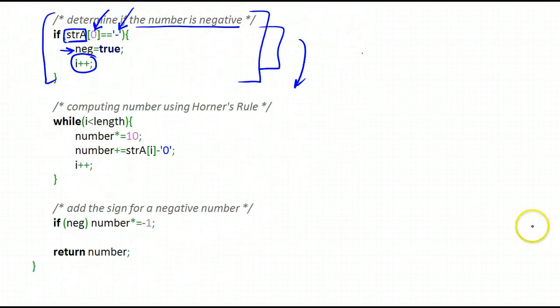And this is where most of the logic is happening. We are computing the number by using the Horner's rule we talked about. So I am using the length to dictate where I stop. I take my i from wherever it was, either one or zero, and I go till the end of the string.